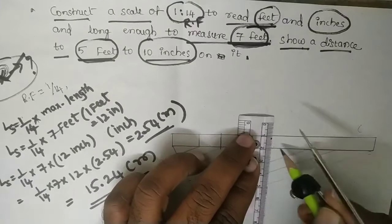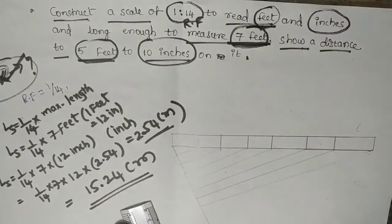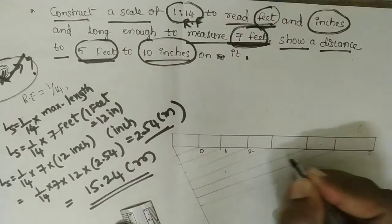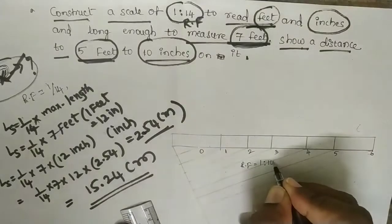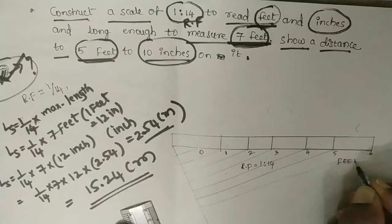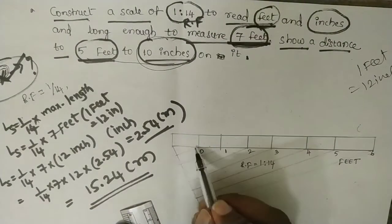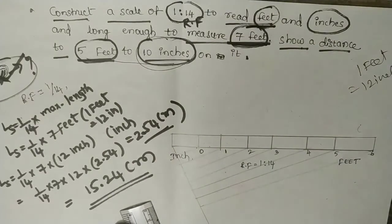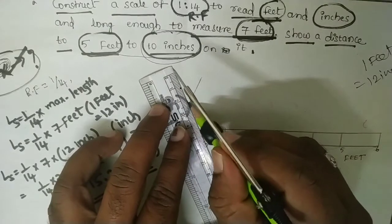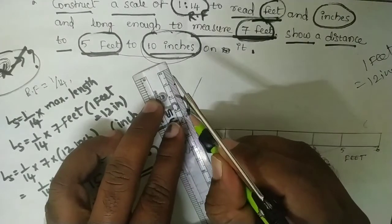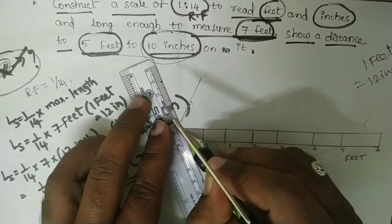Each part represents 1 foot. Start with 0, 1, 2, 3, 4, 5, 6. The RF equals 1 is to 14 — these are feet. Since 1 foot equals 12 inches, we take 12 equal parts. Divide the first division of the scale into 12 equal parts, each representing 1 inch, using the line dividing method.